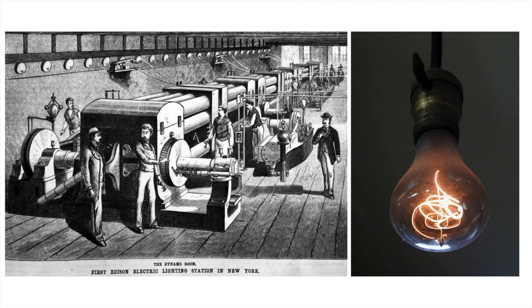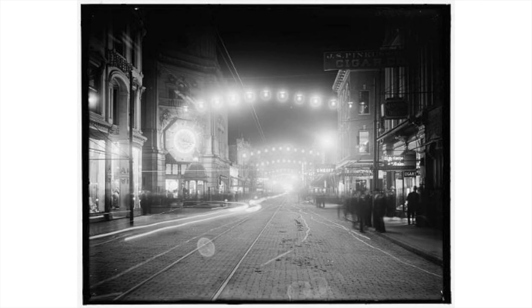Think about how the light bulb is going to change things. Factories can now operate with electric lights, which means they can stay open all night. One of the few reasons factories closed was because it was difficult to see — gas lanterns were very dangerous. Now with the incandescent light bulb, we can operate 24 hours a day, increasing demand for workers and producing more goods. Also, street lights allow people to go out at night. Electricity begins to solve all of those problems, transforming communities, cities, and businesses.